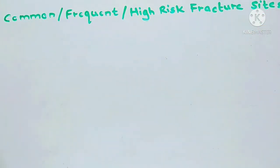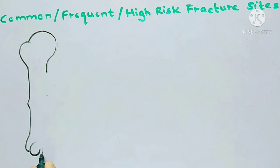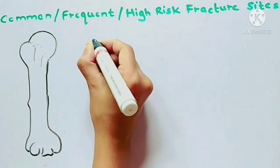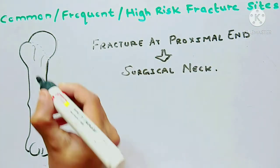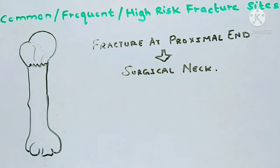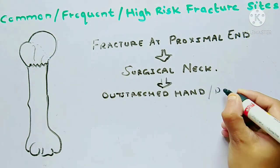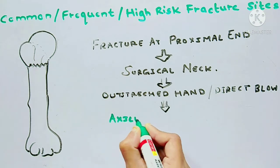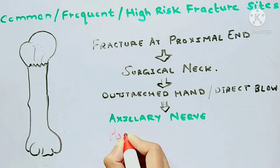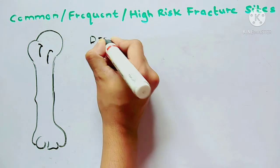Now let's study these parts in detail. Here I'm drawing the right humerus bone again. For fractures at the proximal or upper end, the surgical neck is likely to get fractured. This fracture usually occurs due to falling on an outstretched hand or a direct blow to that area. The key neurovascular structures at risk are the axillary nerve and the posterior circumflex artery.